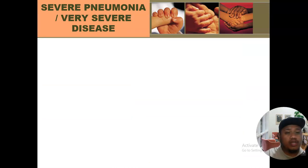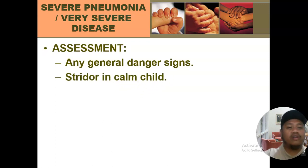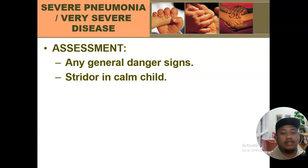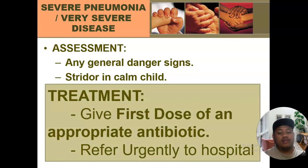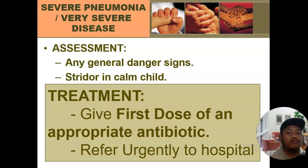For severe pneumonia or very severe disease: to classify the condition as severe pneumonia, you only need to check for the presence of a danger sign and/or stridor. At least one danger sign, or if stridor is present, it is already classified as severe pneumonia — pink classification. The treatment is to give the first dose of appropriate antibiotic and refer the child urgently. The antibiotic is a combination of ampicillin plus gentamicin; if ampicillin is unavailable, use penicillin plus gentamicin.